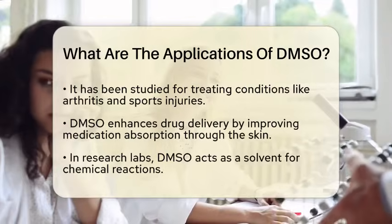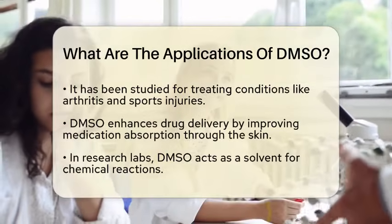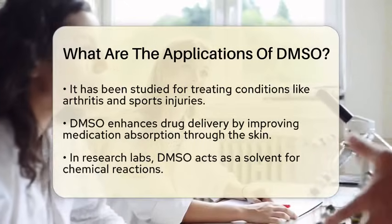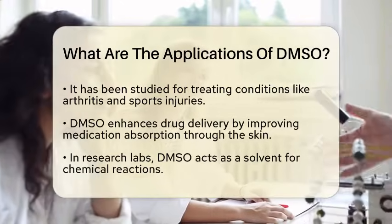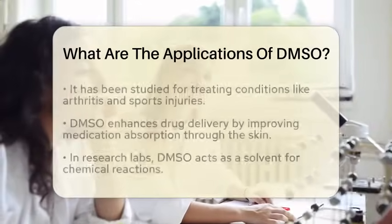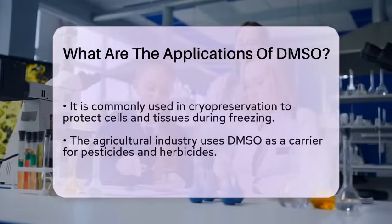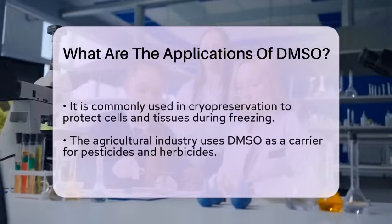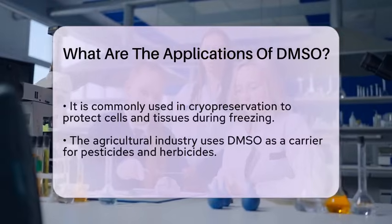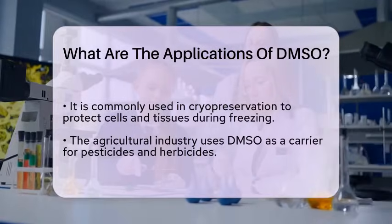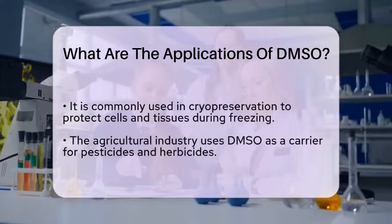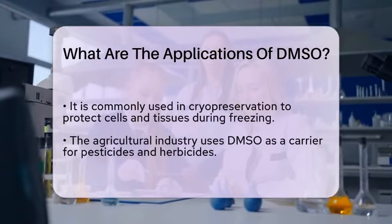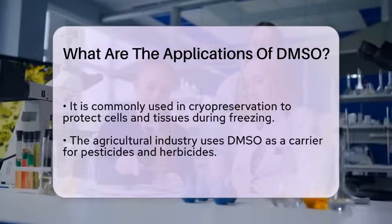In research laboratories, DMSO serves as a solvent for chemical reactions and is frequently used in cryopreservation. It helps protect cells and tissues from damage during the freezing process, making it essential for preserving biological samples. The agricultural industry also utilizes DMSO as a carrier for pesticides and herbicides, improving their effectiveness by facilitating better absorption into plants.